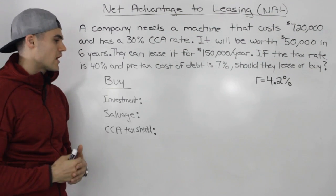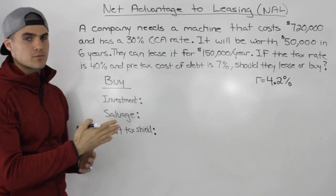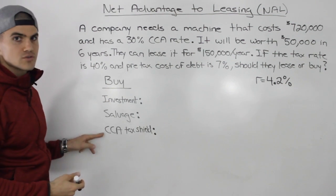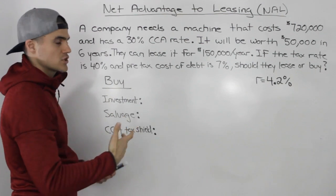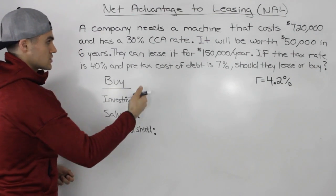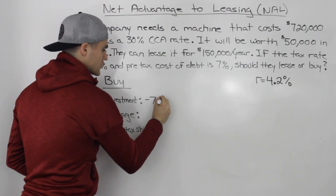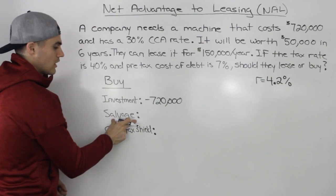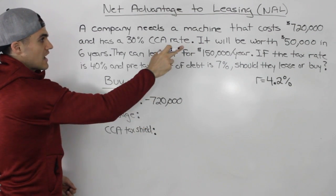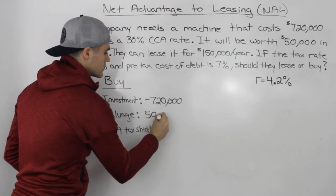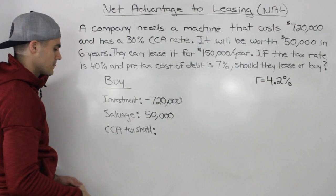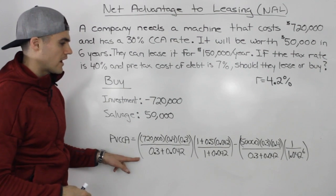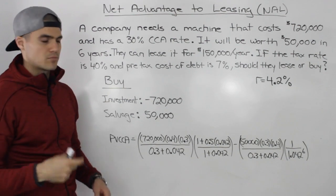Now let's describe the cash flows associated with each option, starting with buying the machine. There are three cash flows. First, the investment: we pay $720,000 today, so that's a negative cash flow of $720,000. Second, the salvage value of $50,000 in six years — a positive cash flow. Third, we have to find the present value of the CCA tax shield using the capital budgeting formula, where the discount rate used is the after-tax cost of debt of 4.2%.